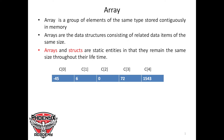Here is an example of an array. The name of the array is C and it has five elements. The first element is negative 45, the second is 6, the third is 0, the fourth is 72, and the fifth is 1543. C[0] is what we call the array index — it shows the location of a particular element within the array.